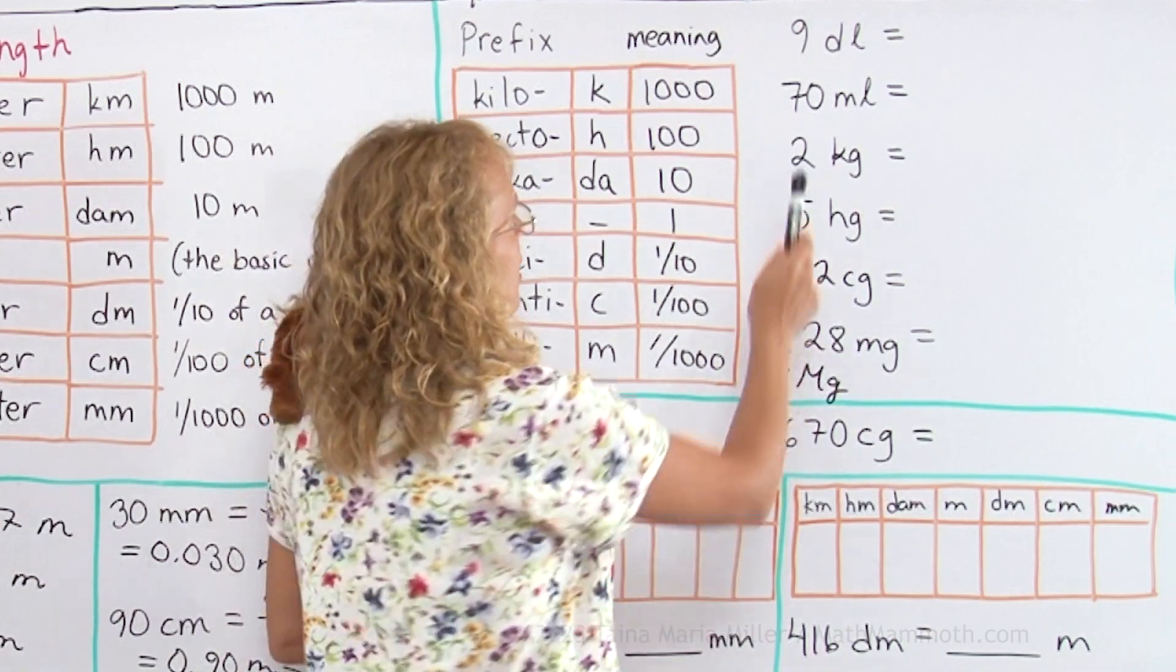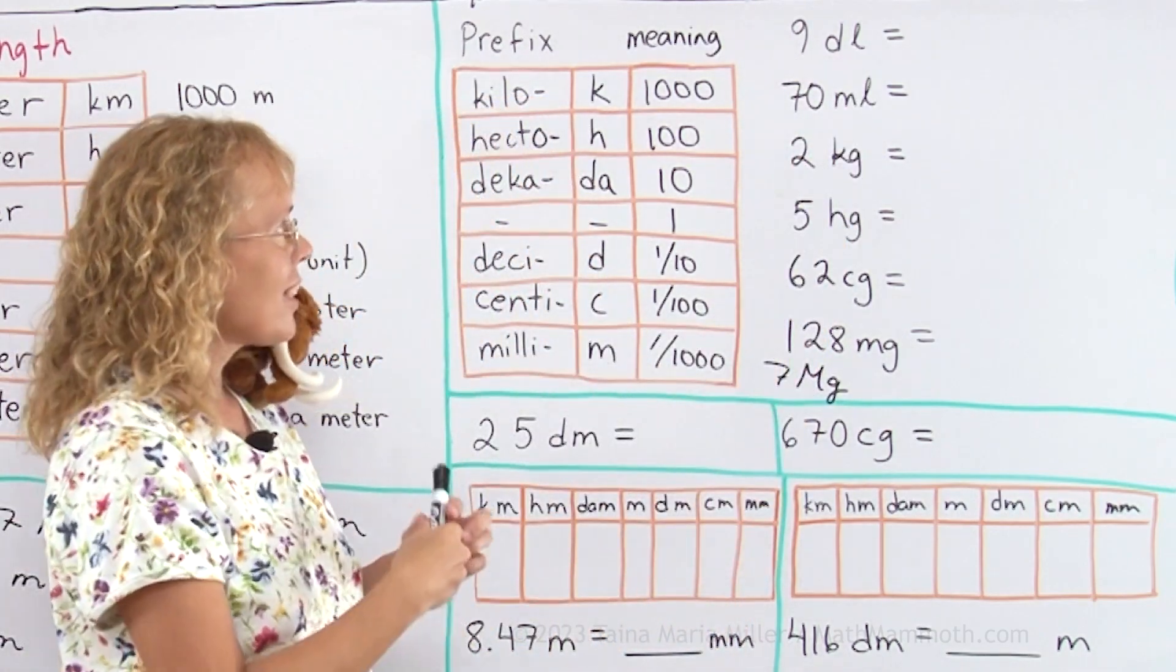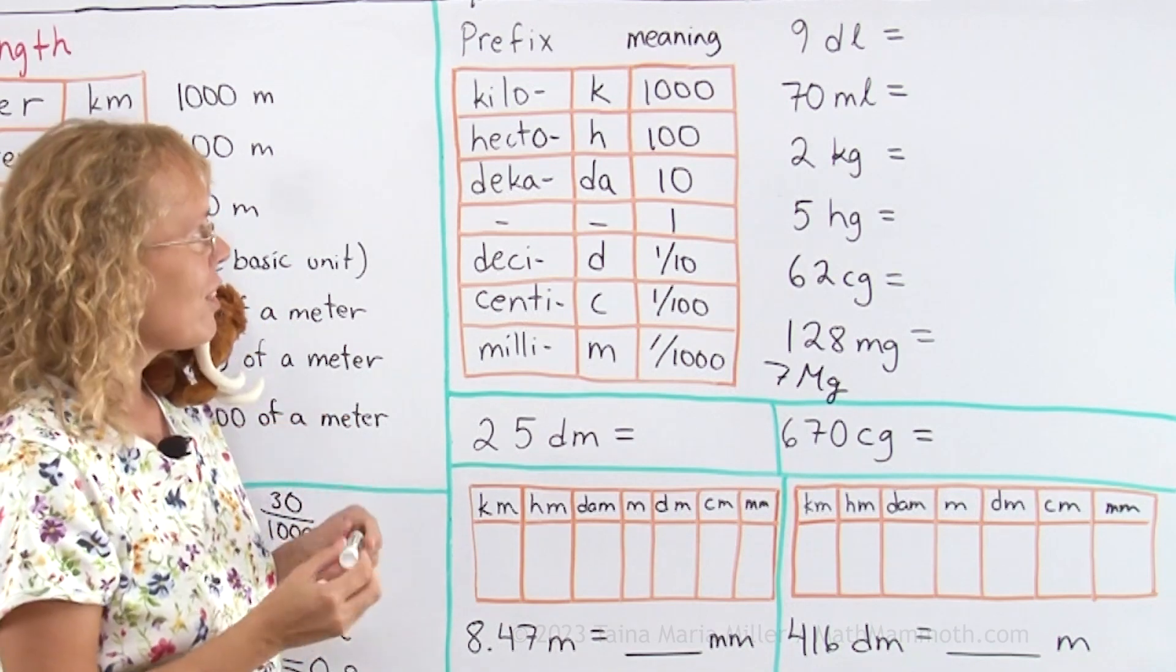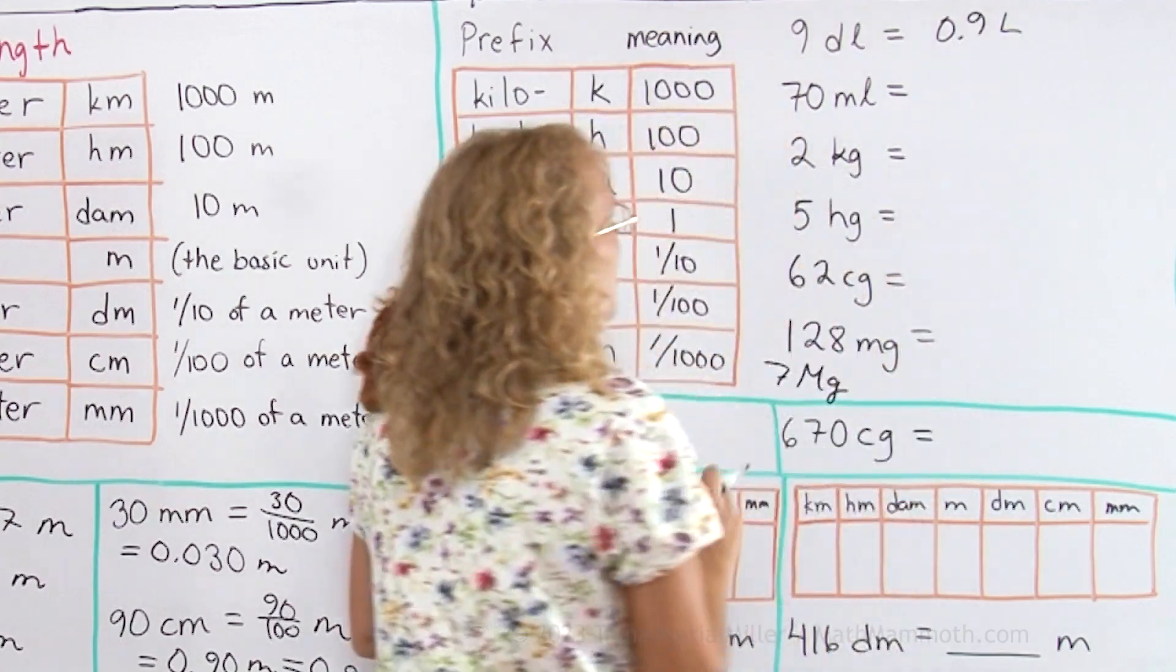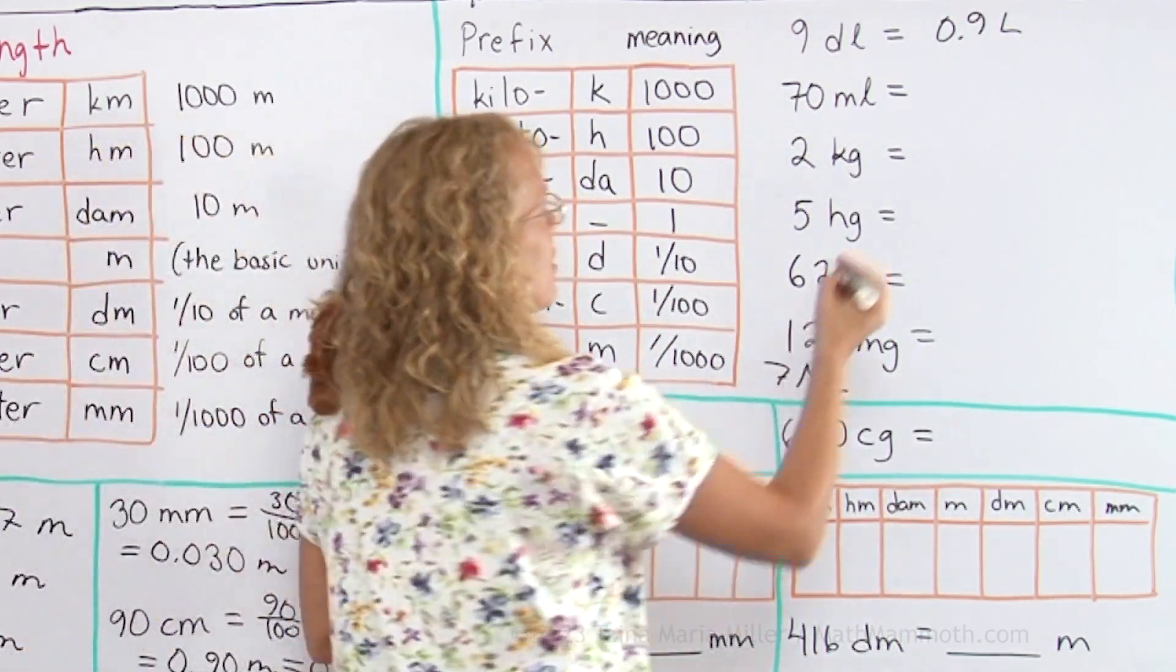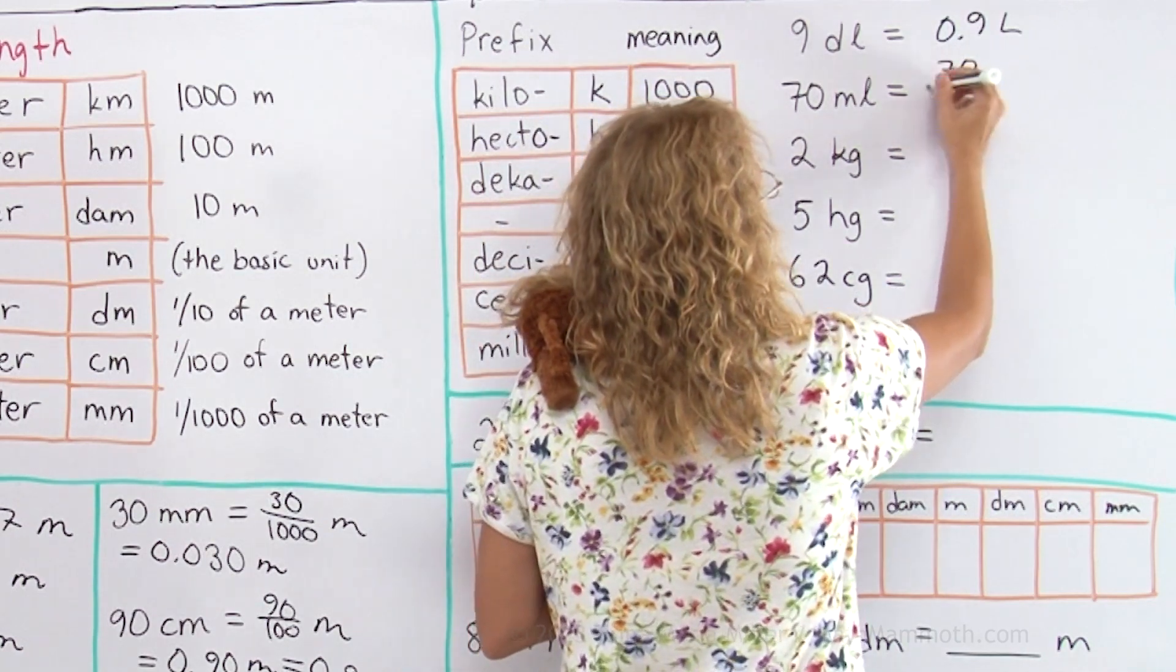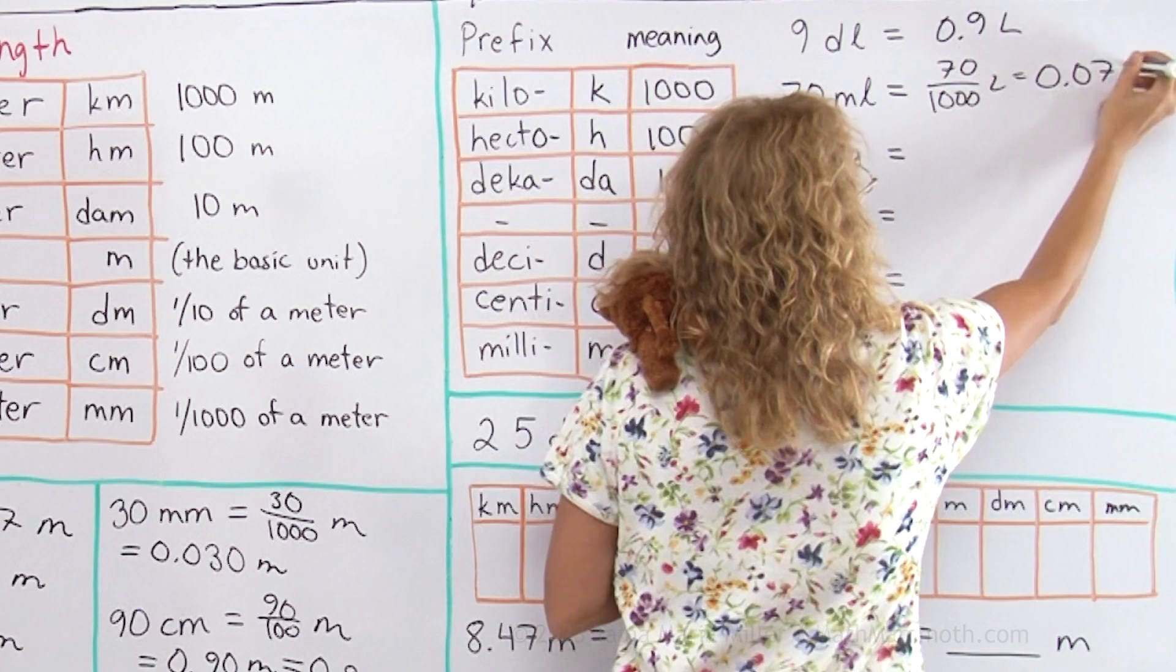Let's do a few more exercises. Nine deciliters into the basic unit, liters. Deci meaning a tenth, so I have nine tenths. As a decimal, 0.9 liters. 70 milliliters. Milli is thousandth, so I have seventy thousandths of a litre. As a decimal, 0.070 liters.